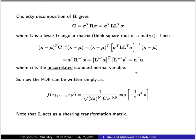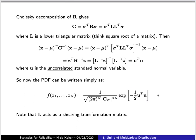So having done that, we can now rewrite our multivariate probability distribution function as being proportional to an exponential function of this inner product of the uncorrelated standard normal variable vector. And this is the fundamental result that we've been working towards.